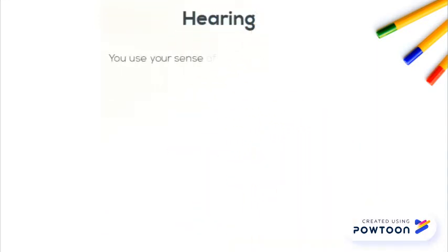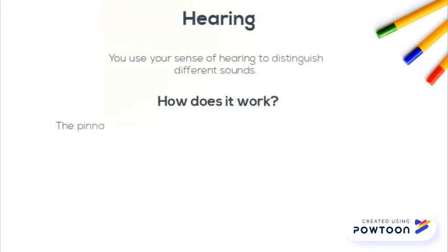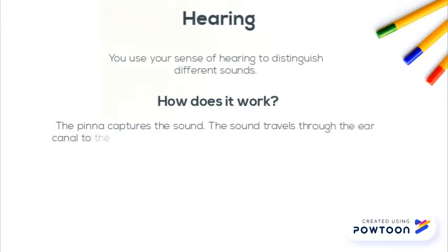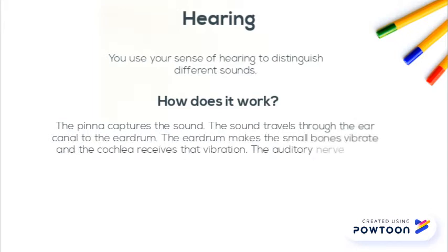Hearing. You use your sense of hearing to distinguish different sounds. How does it work? The pinna captures the sound. The sound travels to the ear canal to the eardrum. The eardrum makes the small bones vibrate and the cochlea receives that vibration. The auditory nerve takes that information to the brain.